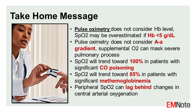Take-home message: Pulse oximetry does not consider hemoglobin level — SpO2 may be overestimated if hemoglobin is less than 5 grams per deciliter. Pulse oximetry does not consider the A-a gradient, and supplemental oxygen can mask severe pulmonary processes. SpO2 will trend toward 100% in patients with significant carbon monoxide poisoning, and toward 85% in patients with significant methemoglobinemia. Peripheral SpO2 can lag behind changes in central arterial oxygenation.